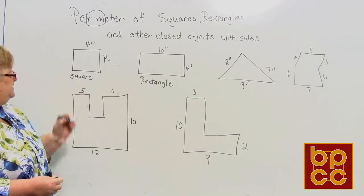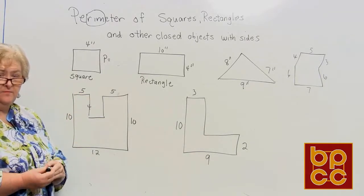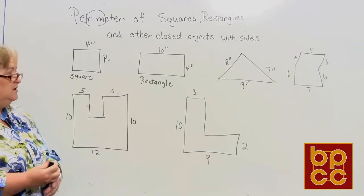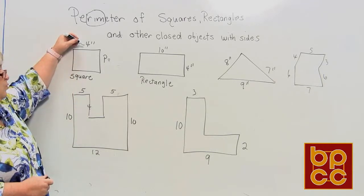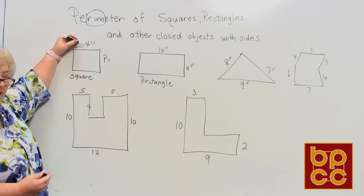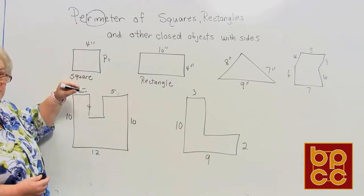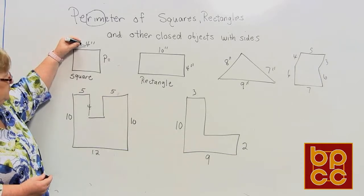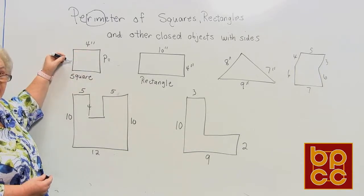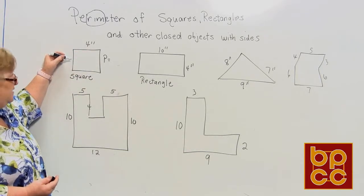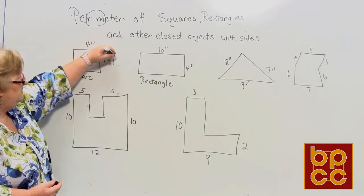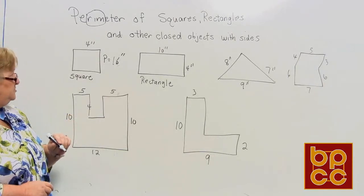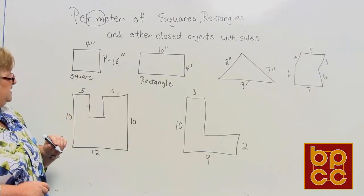Let's say we have this square right here. A square has all sides the same length, so if one side is four inches, I don't have to label the others. We take four plus four plus four plus four and add up all four sides to get the perimeter, which is 16 inches.